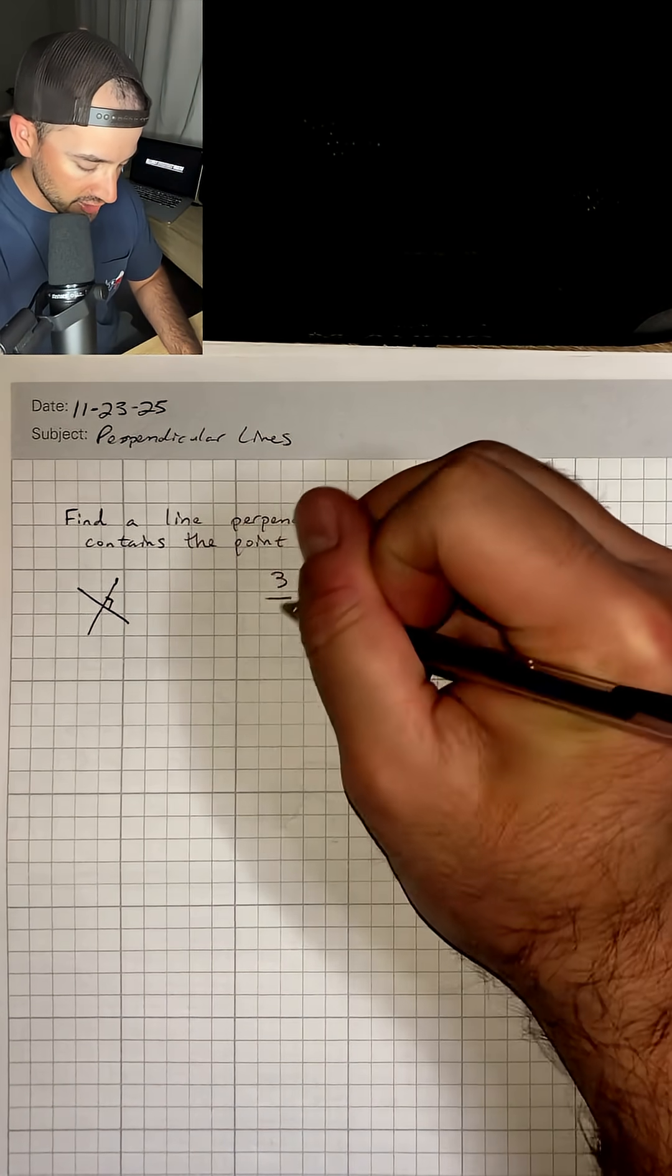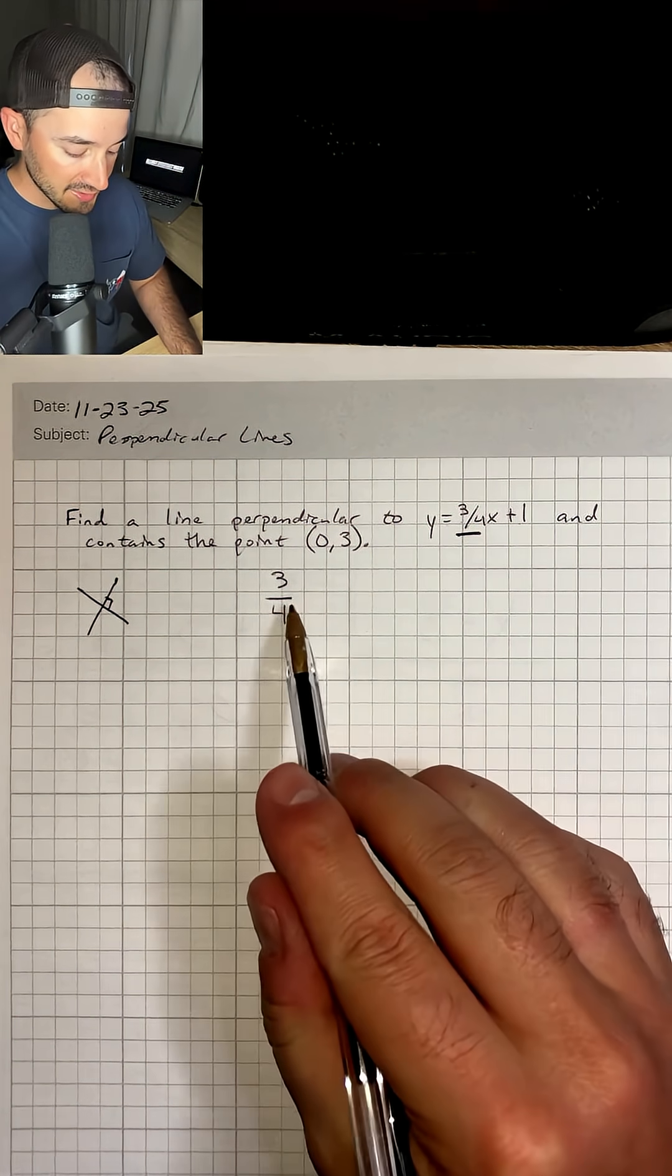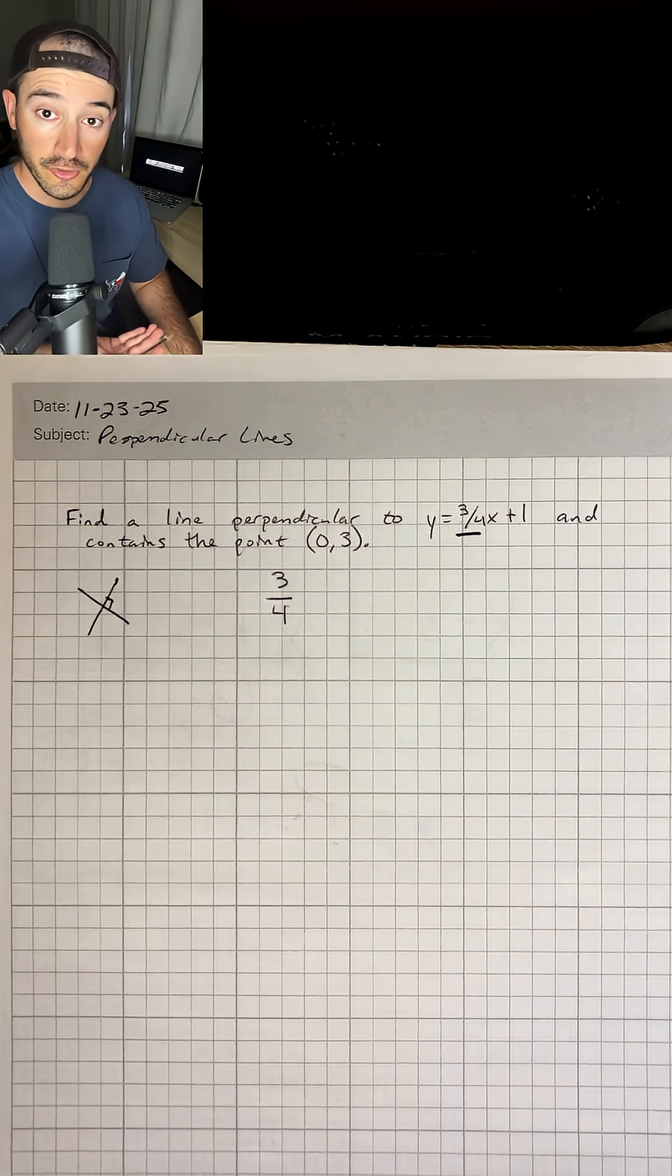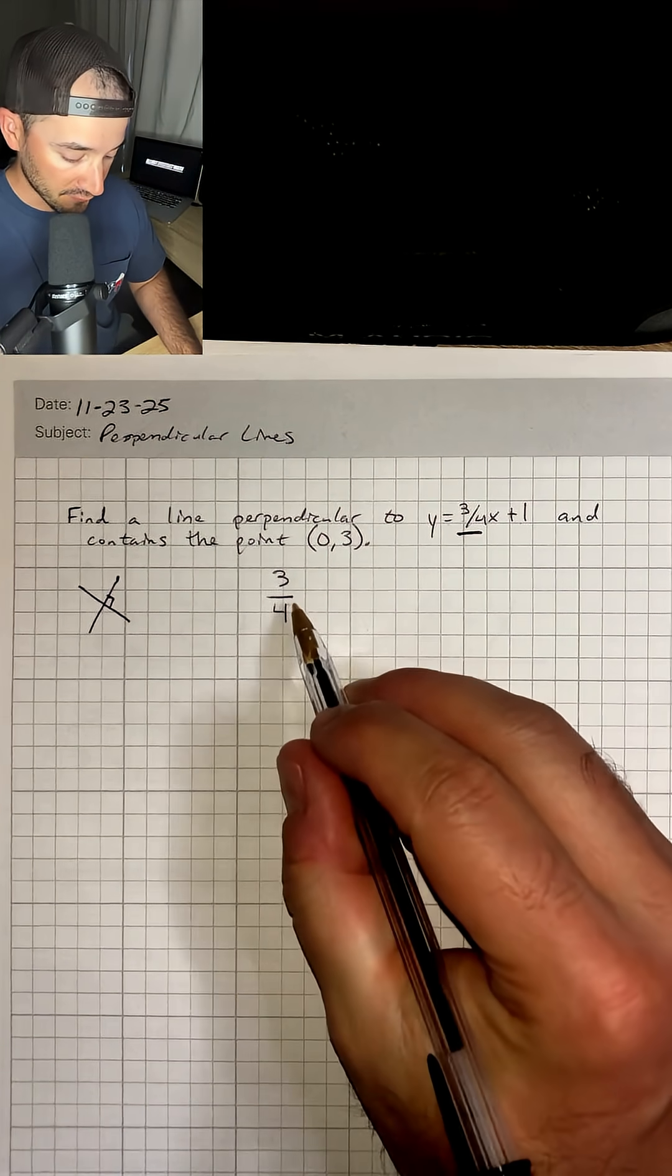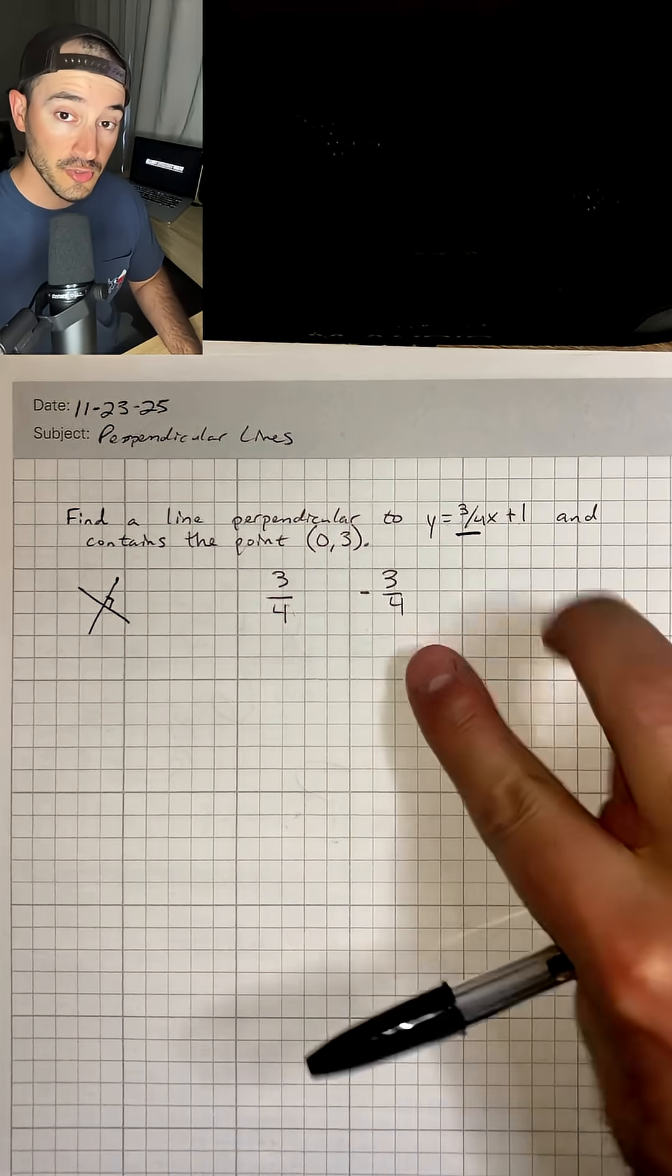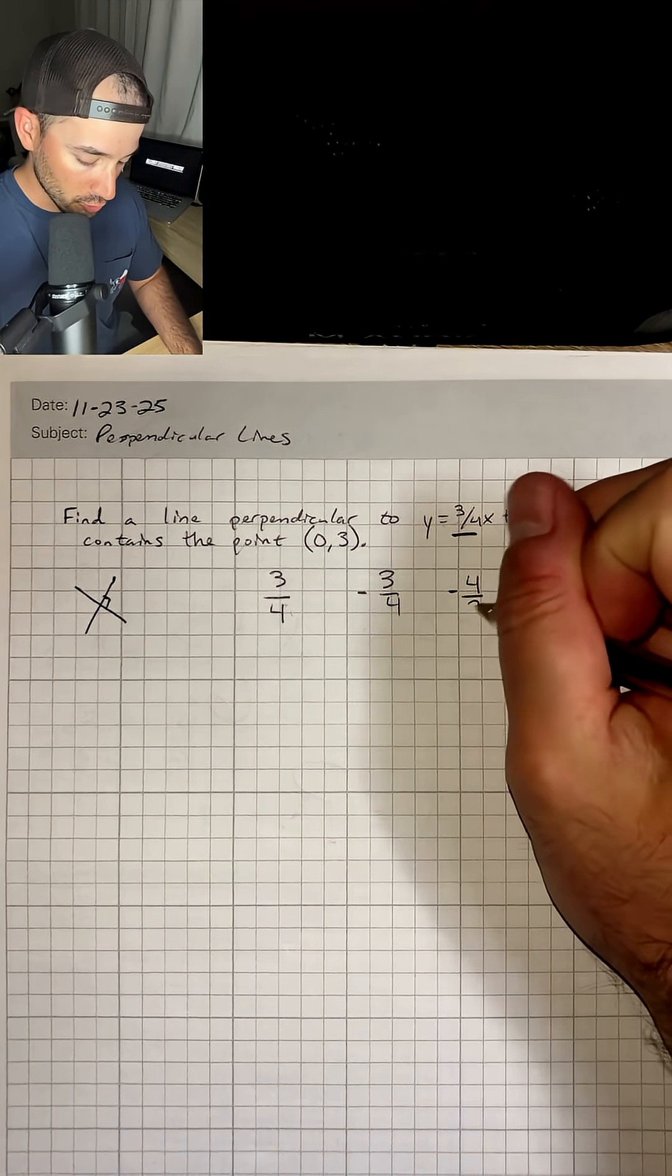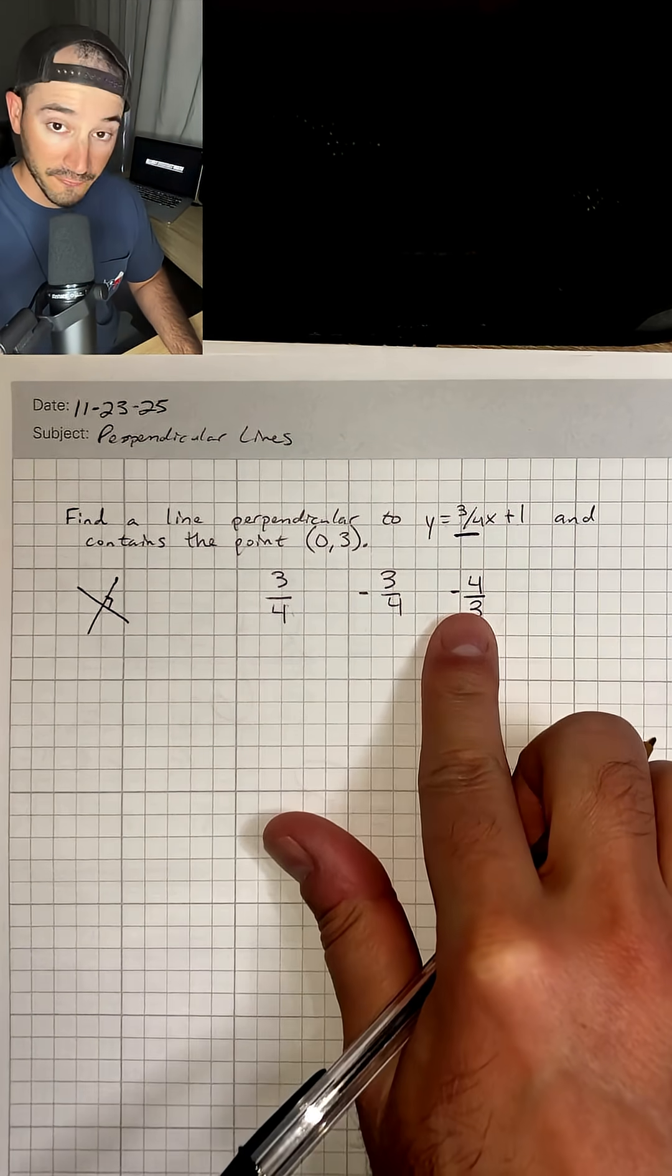Let's write that down, 3/4. If we want a perpendicular line, we can take the opposite or negative reciprocal of this slope, and that's going to be our new slope. So if it's 3/4, we're going to take the opposite or negative of this fraction, so it's going to be negative 3/4. And then we're also going to flip it or take the reciprocal, and that's going to make it negative 4/3. You can see that we change the sign and we flip the fraction.